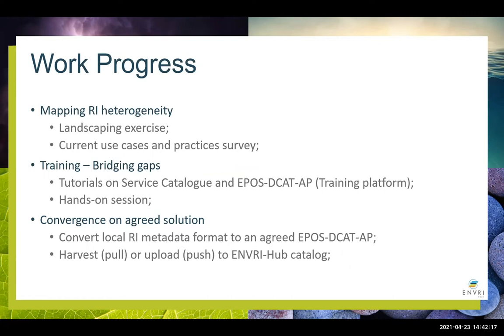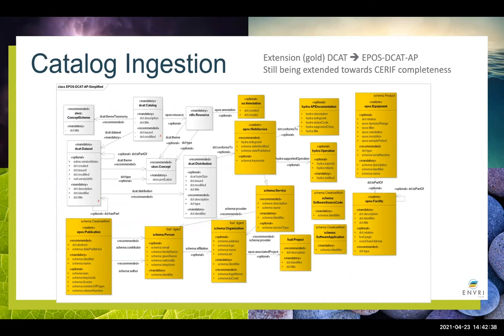The third aspect of our progress is convergence on an agreed solution. We're going to convert local RI metadata to EPOS DCAT-AP — everyone's agreed on that — and then we can either harvest by pulling or upload from the RI by pushing to the Envry Hub catalogue. Just to give you an idea of the scale of the problem: what is in silver on this diagram is standard DCAT, and what is in gold is the extension of DCAT for EPOS DCAT-AP. To get rich enough metadata to do useful things, it's very necessary to make a very heavy extension to DCAT.